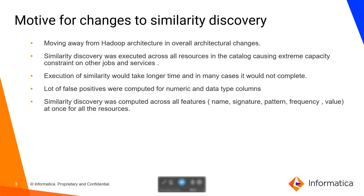What is the main motive for changes to the similarity discovery feature from EDC 10.4 to EDC 10.5? The main reason is to move away from the Hadoop architecture, which is the biggest change in the overall architecture. Similarity discovery was executed across all resources in the catalog, causing extreme capacity constraints on other jobs and services. A lot of false positives were computed for numeric and data type columns, and a lot of duplicates were generated. Similarity discovery was computed across all features all at once for all resources, and the persistence store was not shared between similarity and catalog, affecting the performance of the catalog service.